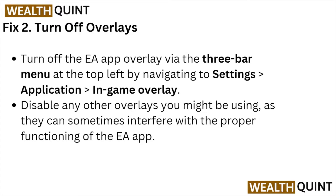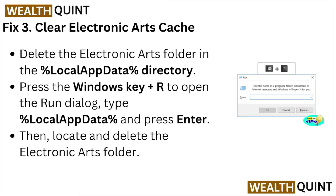Fix number two: turn off overlays. Turn off the EA app overlay via the three-bar menu at the top left, navigating to Settings, then Application, then In-Game Overlay. Also disable any other overlays you might be using, as they can sometimes interfere with the proper functioning of the EA app.